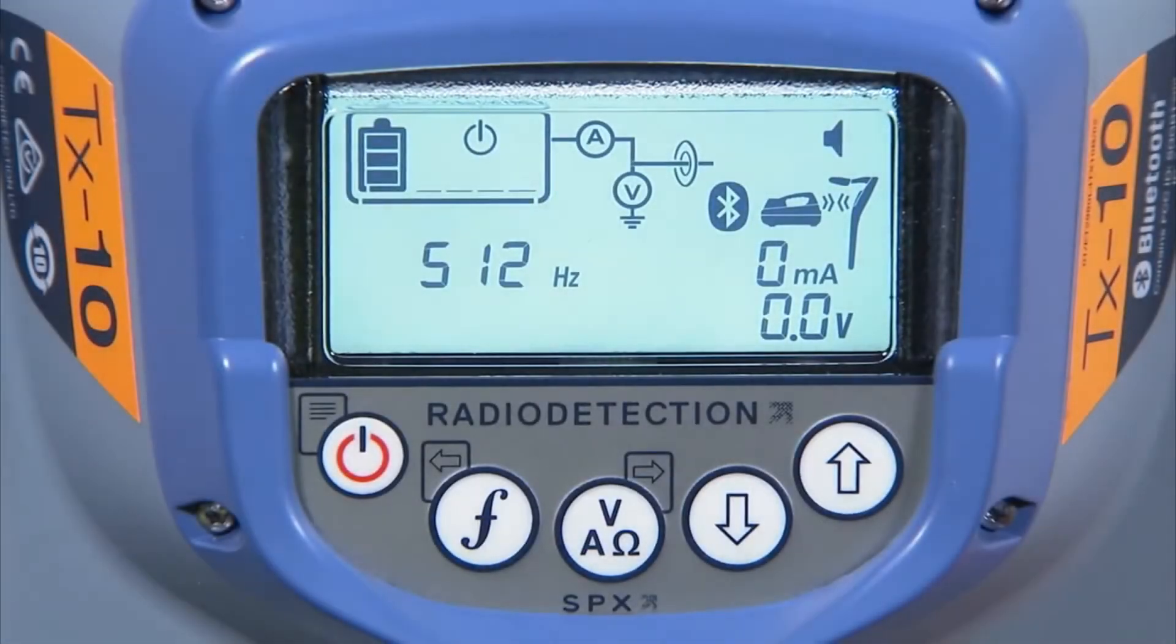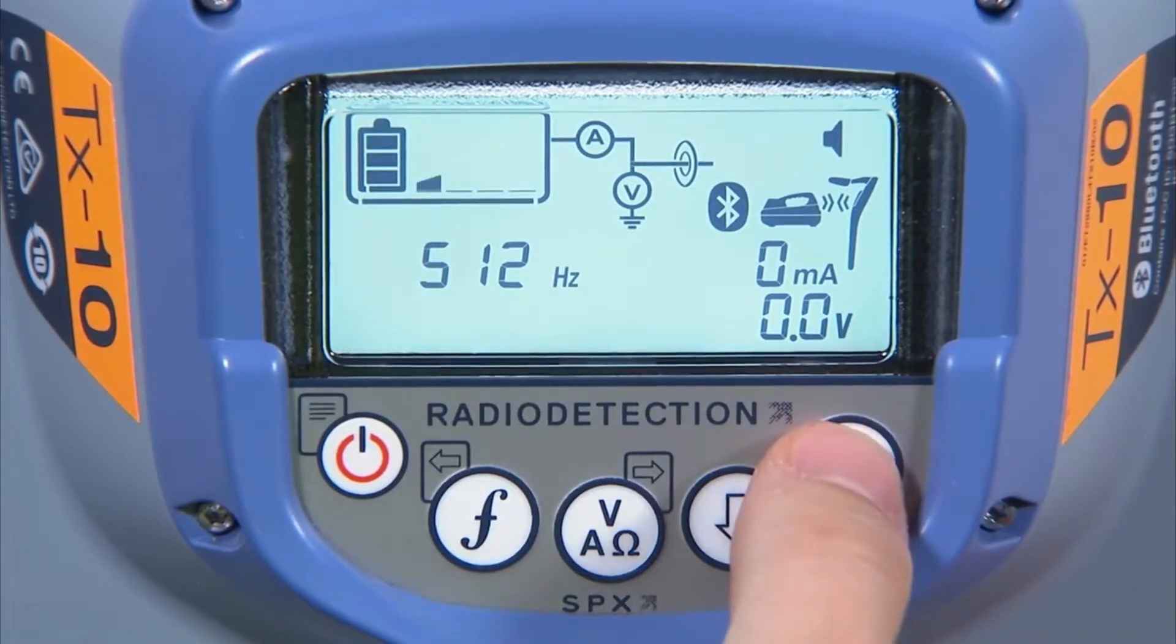When you are using the locator with direct connection cables, the unit will power on in the last setting used. You then have five selectable outputs that can be selected using the up-down arrow keys.